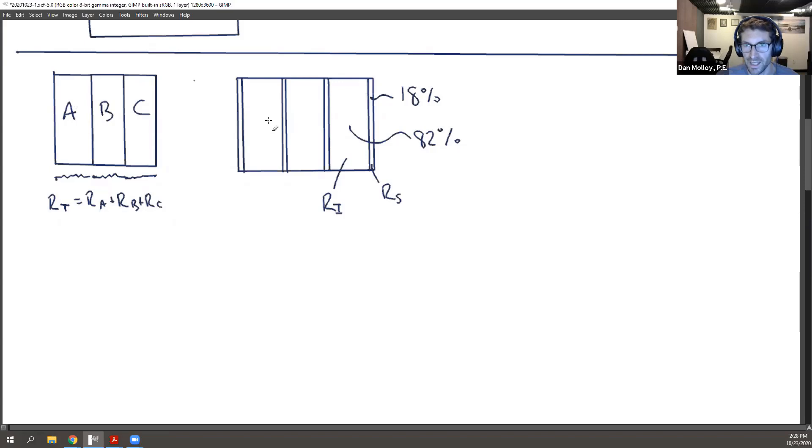Now, you might say, well, there's a lot more insulated area, so it's more likely to go through that. But that area is insulated, which is why we build walls the way we do. The studs is a lot smaller area, but maybe it's easier to get through.